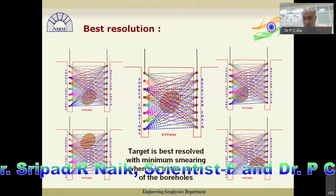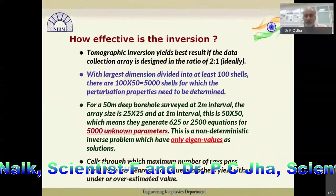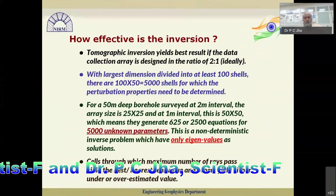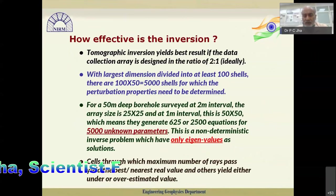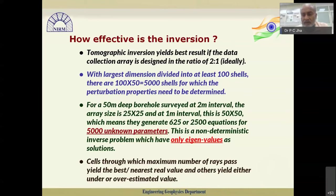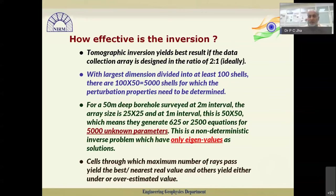Tomographic inversion yields best results if the data collection is designed in a 2:1 ratio — if borehole separation is 1, depth should be 2, or for 15-meter separation, 30-meter depth is ideal. We divide the largest dimension into 100 cells, making 100×50 = 5000 cells for which perturbation properties are determined. For a 50-meter deep borehole surveyed at 2-meter intervals, the area size will be 25×25 or 50×50 — that is 625 to 2500 measurements maximum. These will generate 600 to 2500 equations from which we have to determine 5000 unknown parameters — it is not possible with 2000 equations to get 5000 values. This is a non-deterministic inverse problem giving only eigenvalues as solutions, and the minimum RMS value is taken as the tomogram.